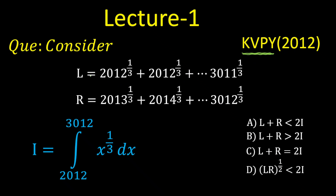So the question is: L is given as a number equal to the sum of cube roots of numbers starting from 2012 to 3011. R is another number given as the summation of cube roots from 2013 to 3012. And I is one more value given as the integration of x to the power 1/3 with respect to x, with lower limit 2012 and upper limit 3012.